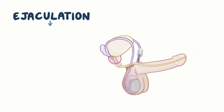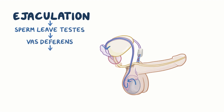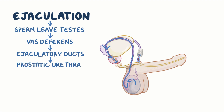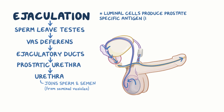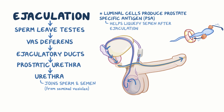During an ejaculation, sperm leave the testes, travel through the vas deferens into the ejaculatory ducts, and travel through the prostatic urethra. Smooth muscles in the prostate contract and push the prostatic fluid into the urethra, where it joins the sperm as well as the semen, which is the fluid that comes from the seminal vesicles. The luminal cells also produce prostate-specific antigen, or PSA, which helps to liquefy the gel-like semen after ejaculation, thereby freeing the sperm to swim.